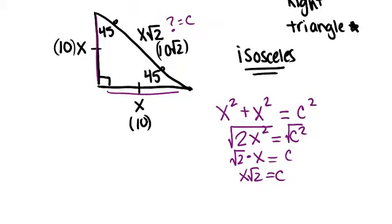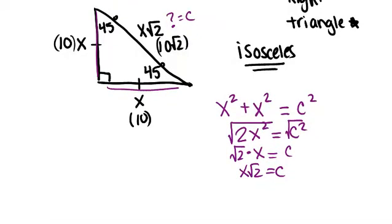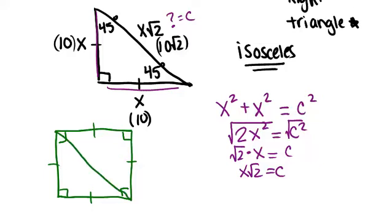One common place that you will see 45-45-90 right triangles is as half of squares. If you have a square, remember it would have all four angles are right angles, and all four sides are the same length. So, if we draw in a diagonal, you might wonder, what's the length of that diagonal?